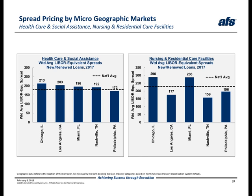On the next slide, we have a similar picture where now the metric is LIBOR equivalent spread pricing. Starting on the left, we can see that four of the five geographic markets displayed spreads above the national average for healthcare, with only Philadelphia falling behind the average. Spreads in this industry range from a high of 213 basis points in Chicago to a low of 172 basis points in Philadelphia. For nursing care facilities on the right, we see a wider range in spread pricing across the regions. What's interesting here is that the regional market with the highest rate of loan growth for nursing care facilities, which is Chicago, also posted the highest average LIBOR equivalent spread. Conversely, Nashville, which had the deepest decline in balances for nursing care facilities, had the lowest average spread.